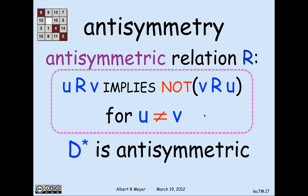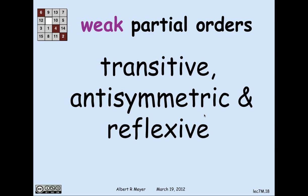The walk relation in a digraph, including length-0 walks, is antisymmetric. A weak partial order is what you get when you put these properties together: it is transitive, antisymmetric, and reflexive. Note: asymmetric implies nothing is related to itself; reflexive implies everything is related to itself. A relation that is merely transitive and antisymmetric — where some elements are related to themselves and some are not — is neither strict nor weak partial order, and those don't come up much.